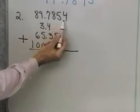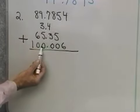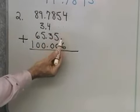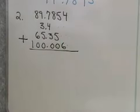I have 89.7854, 3.4, 65.35, and 100.006. So, I could, if I want, fill in zeros in these places right here if I want to, but I won't do that.